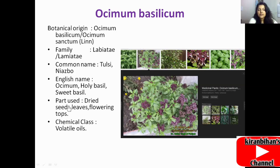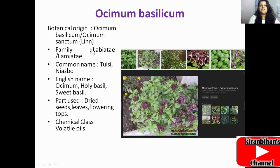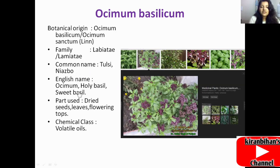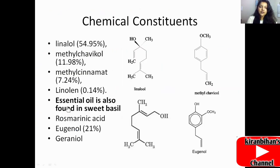The chemical class of this plant is the volatile oil — it is volatile in nature. As you can see in this slide, the botanical name is Ocimum basilicum or Ocimum sanctum, discovered by Linnaeus, family Lamiaceae. Common name is Tulsi and Nazbu, English names are holy basil and sweet basil, parts used are dried seeds, leaves, and flowering tops.